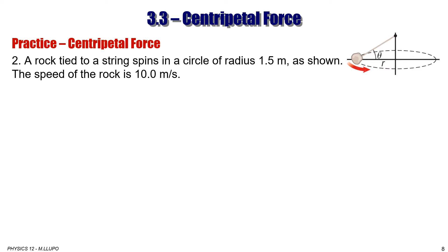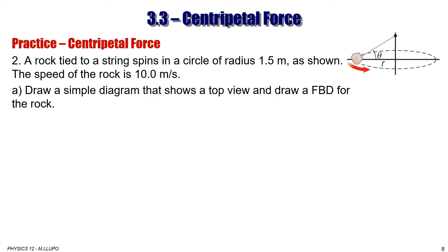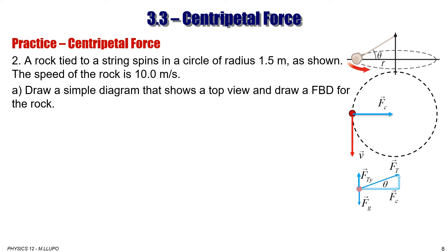Let's do another practice problem. A rock tied to a string spins in a circle of radius 1.5 meters. The speed of the rock is 10 m/s. Part (a): draw a simple top-view diagram and a free body diagram for the rock. In the top view, the circle is shown with velocity tangent to the circle and centripetal force pointing toward the center. In the free body diagram, the tension in the string is split into an x-component (centripetal force) and a y-component that cancels gravity, making the ball float in air.